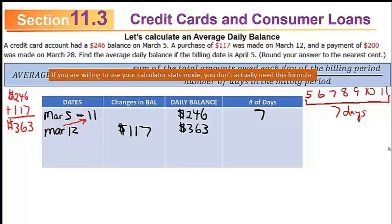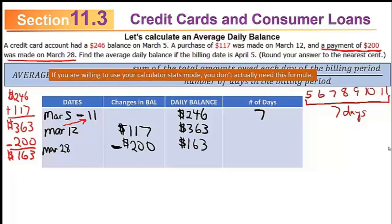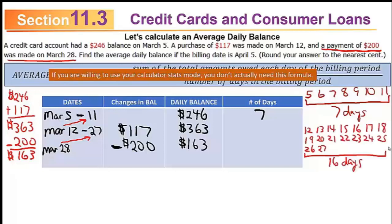Moving to the next transaction: a payment of $200 was made on March 28th. A payment decreases the credit card balance, so that's minus $200. Taking $200 away from the previous daily balance of $363 leaves a daily balance of $163. Now fill in the ending date on the previous row: since the payment was made March 28th, the $363 balance ended the day before, on March 27th. Counting from March 12th to 27th: 27 minus 12 plus 1 equals 16 days.